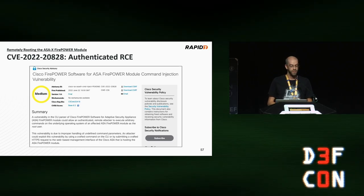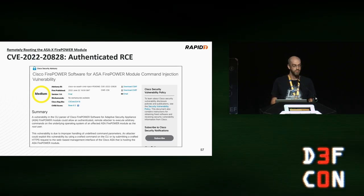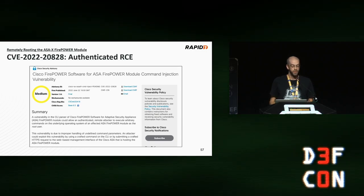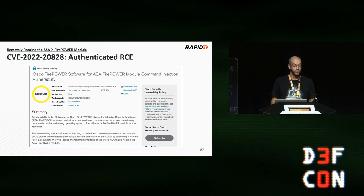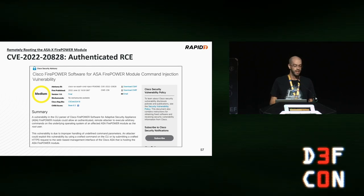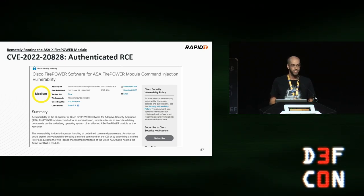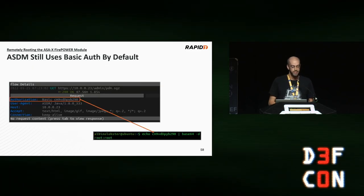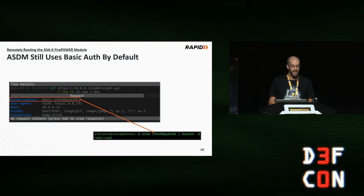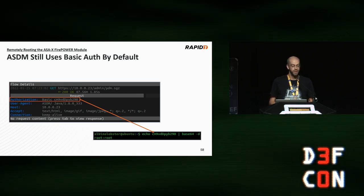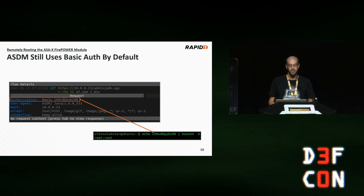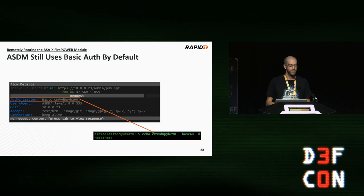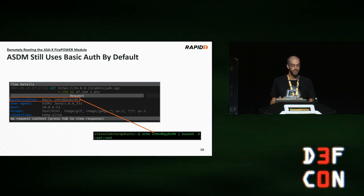Cisco did release an advisory for this, but only after it was determined to be a bypass for the lockdown sensor command. Cisco has released patches for most but not all ASA-X with Firepower Services devices. Their advisory makes a big deal that the attack requires ASDM credentials, which is true — but those credentials might be easier to come by than you'd think. For example, the ASDM client is vulnerable to man-in-the-middle attacks, and by default the ASDM client authenticates using HTTP Basic Auth, which means a man-in-the-middle can trivially extract valid ASDM credentials from any request.